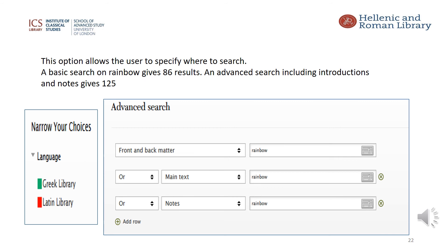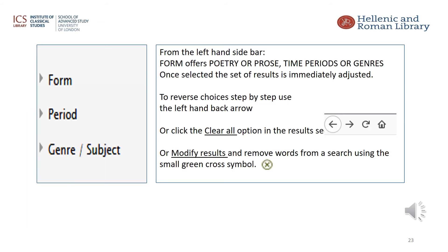The sidebar on the left allows a narrowing of search results for either Latin or Greek, and the results are immediately adjusted. Since each text is categorised as either poetry or prose, and also allocated to genres as well as time periods, these can all be used in the search process. It is easy to reverse a choice using the back arrow at the top of the screen, or you can remove choices by clicking on the very small green cross next to the search word, or the one marked 'clear all' to make a fresh search. The genre option is useful if you want to include fragmentary texts such as the volumes on comedy, lyric, or philosophy.